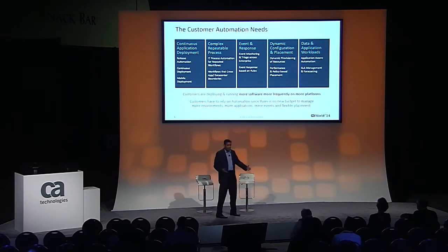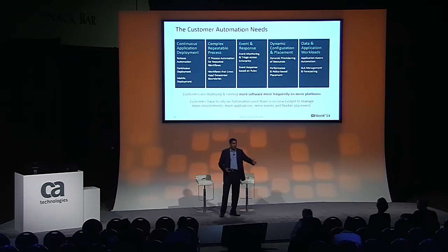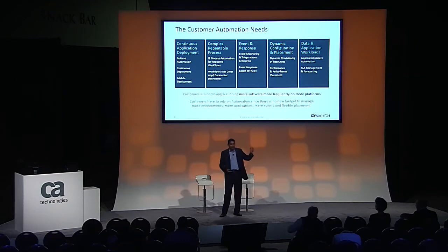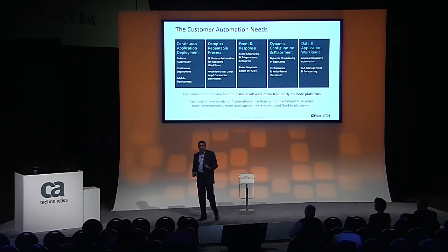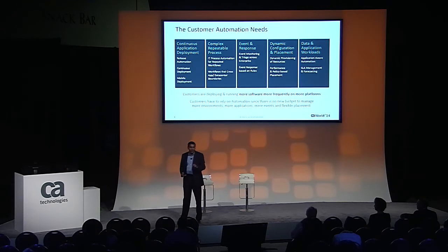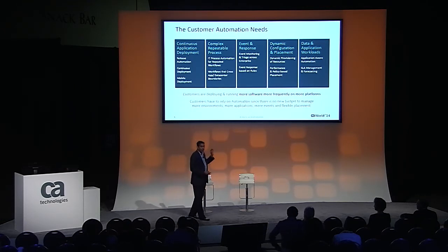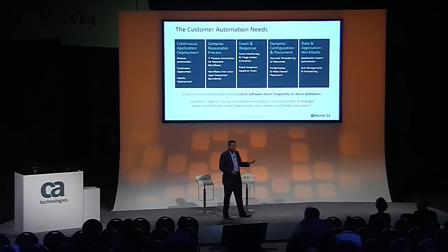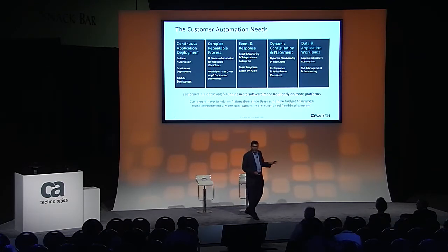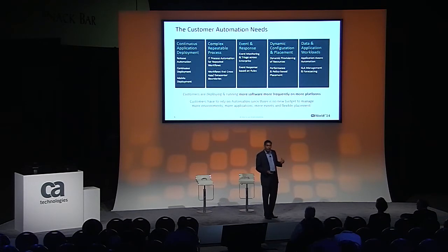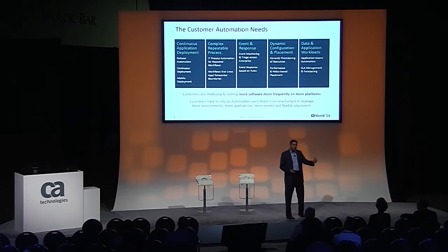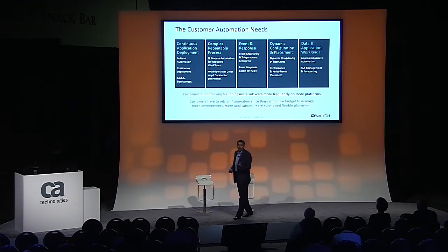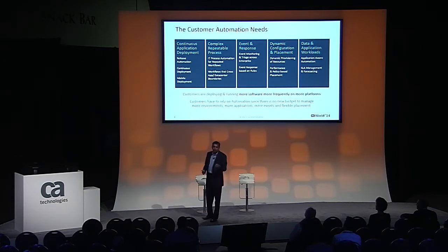Customers are increasingly looking at this ecosystem as a continuum. All kinds of automations are taking precedence, starting from application deployment, release automation, runbook automation, managing events as exceptions happen — as your storage goes down or fills up, what do you do about it? That kind of event-based automation. Dynamic configuration and placement — if you know your load is going to bump up, how do you provision more virtual machines or instances? And finally, the core automation of data flows, workflows, and application processes as part of workload automation.